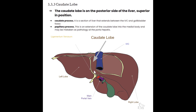The quadrate lobe sits on the posterior side of the liver in the inferior position — caudate is superior, quadrate is inferior. Typically the quadrate lobe is not recognized as its own lobe; it is usually included as part of the left lobe, considered the medial segment of the left lobe. Its borders are the porta hepatis posterior, the gallbladder fossa to the right, the ligamentum teres to the left, and the inferior edge of the liver. In review: quadrate lobe is posterior inferior; caudate lobe is posterior superior; plus left lobe and right lobe.